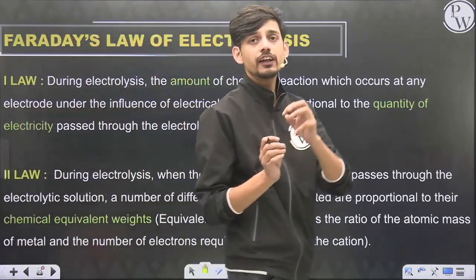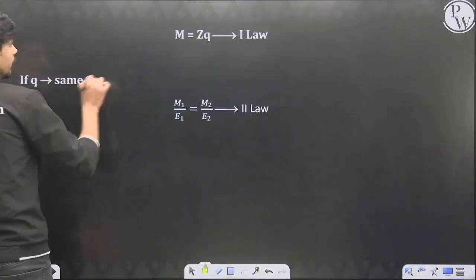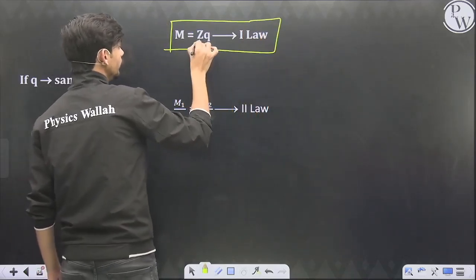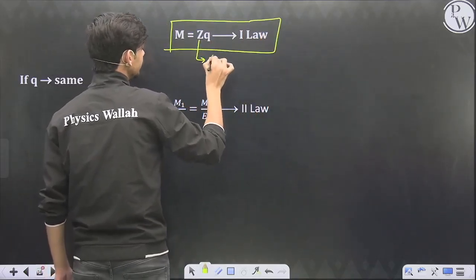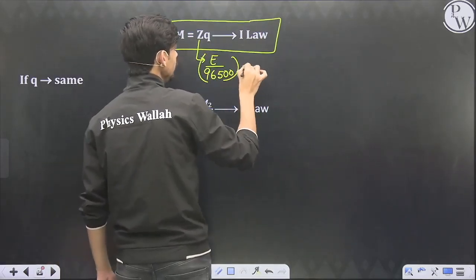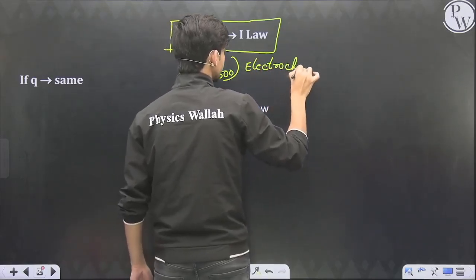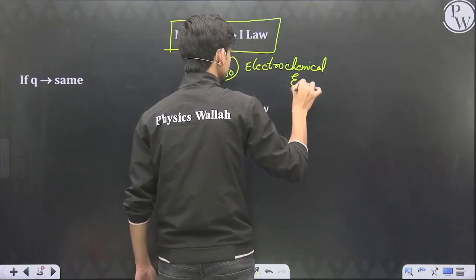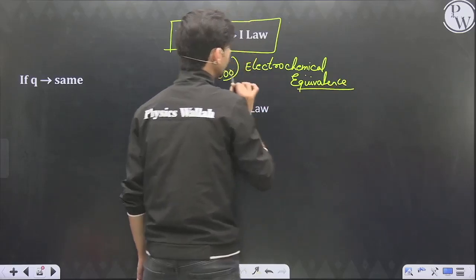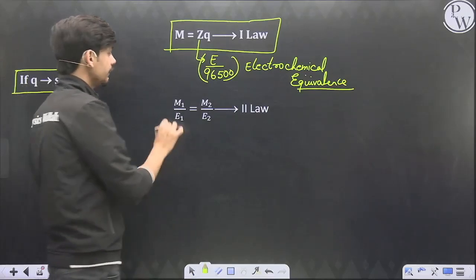The first law: mass deposited = Z × Q, where Q is the amount of electricity and Z is the electrochemical equivalent. For the second law: if the same charge (electricity) is passed through different solutions, the masses liberated will be in the ratio of their equivalent weights.